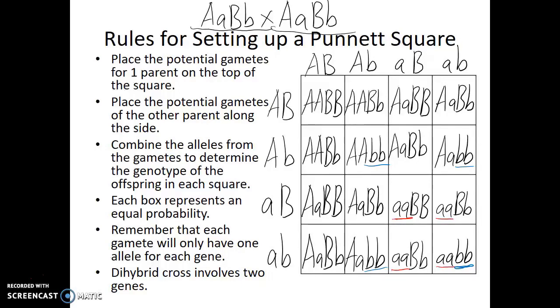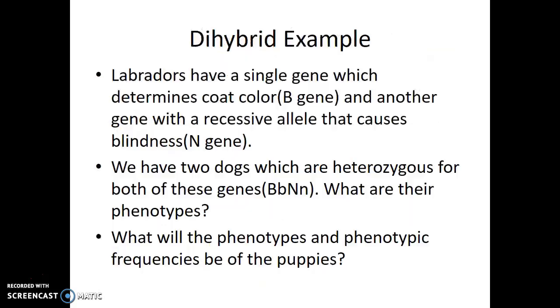Now you may be wondering, why do I need to know this information? How is this relevant? Let's give a slight example. In Labradors, there is a gene that determines coat color. The capital B allele is for black fur, and the recessive b allele is for brown fur.